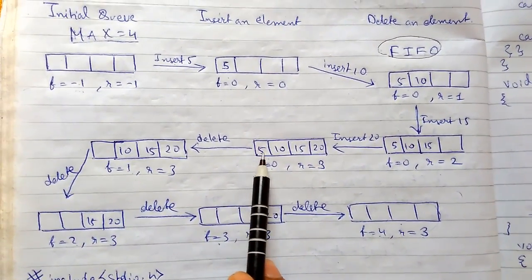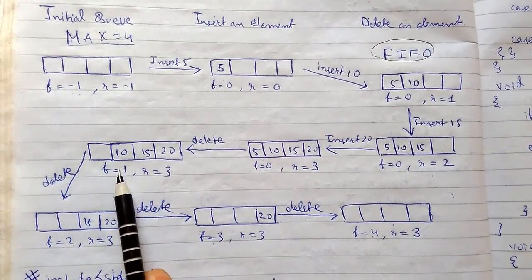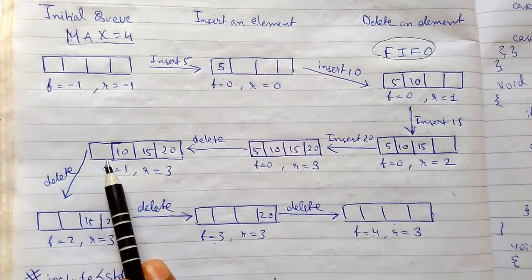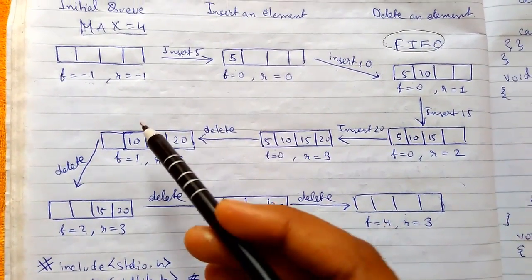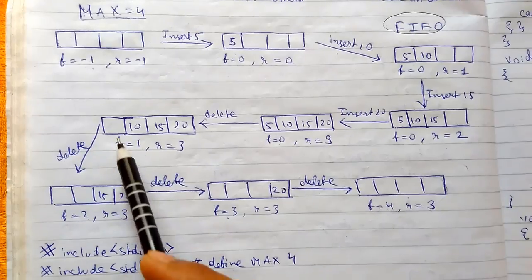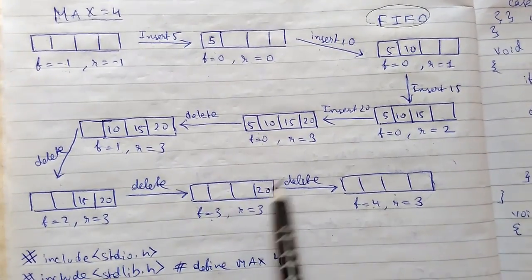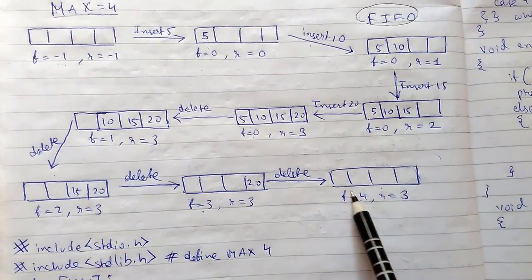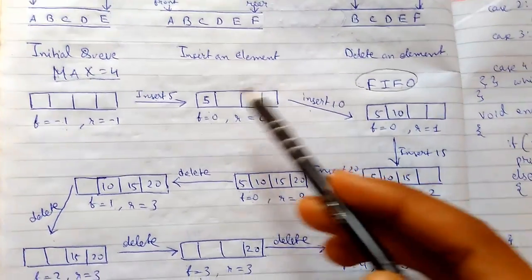Now we will see how the deletion occurs. Deletion from front: this will be 0 and this will be 1. First the value will be upgraded then it will be deleted, or we can say first it is deleted then it is upgraded. Simply again we will delete and upgrade the variable, delete this and upgrade the variable, delete this and finally this is our empty queue. This is how the queue works.